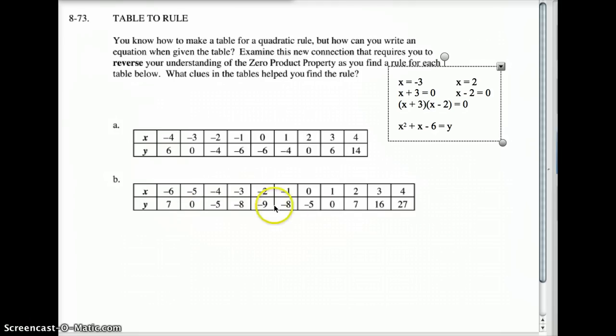Do you notice on here that you can find your vertex right here? At negative 2, this hits negative 9. And then it starts reversing and going the other way. You might notice that it goes up 1, up 3, up 5, up 7. And on the other way, it's up 1, up 3, up 5, up 7, up 9, up 11. You can see the pattern continues. That's one of two patterns that a quadratic equation will take.